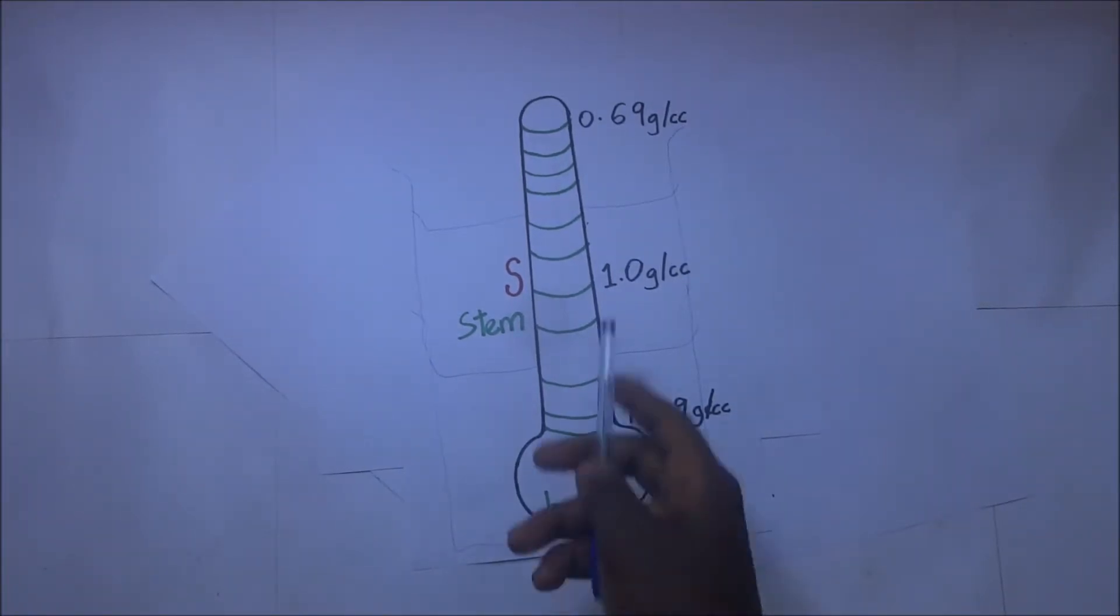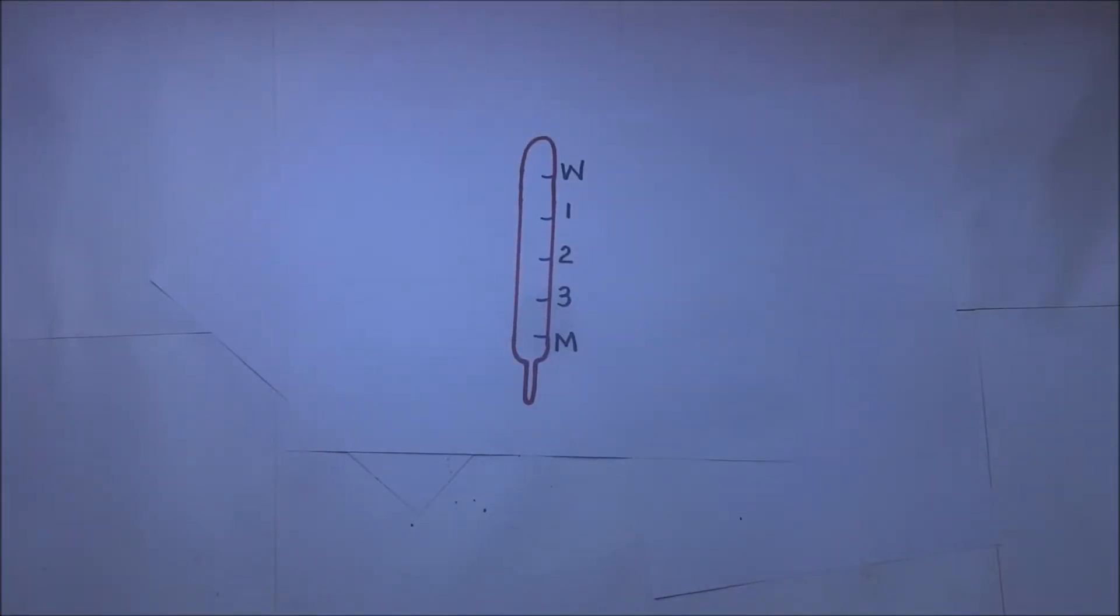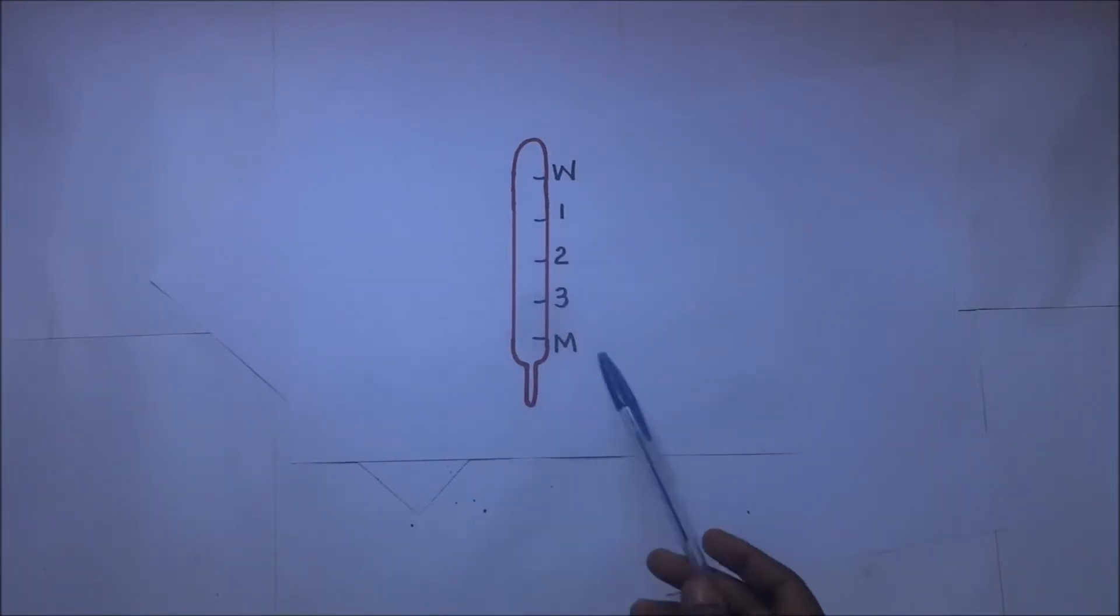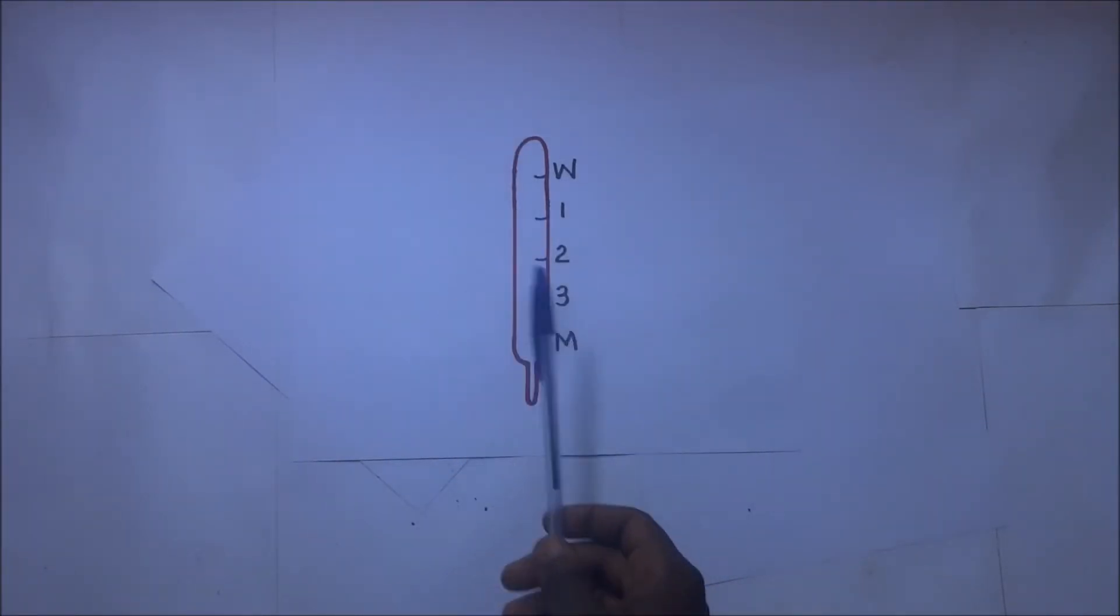This is the common hydrometer, but there are also different other special kinds of hydrometers. For example, we have what we call the lactometer. The lactometer looks as simple as that, has a uniform stem, and is basically used to find the purity of milk.